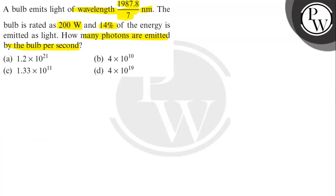What is the value of lambda? Lambda equals 1987.8/7 nanometers, which equals 1987.8/7 × 10^-9 meters.